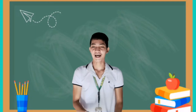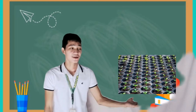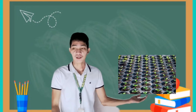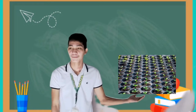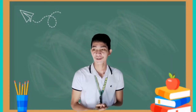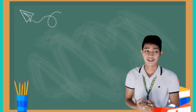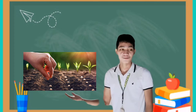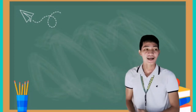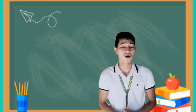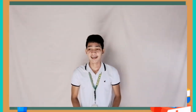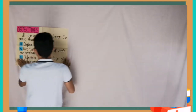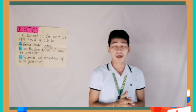Now class, look at this picture. What have you seen or observed in the picture? Anyone in the class? Yes, Hannah — okay, very good. There are seedlings in the picture. How about the next picture? Yes, Donnie — alright, very good. There is performing of sowing of seeds.